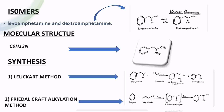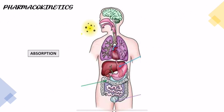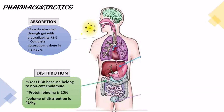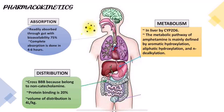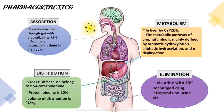Moving towards the pharmacokinetics of Amphetamine: Absorption — Amphetamine is well absorbed in the gut. Distribution — Amphetamine is distributed into body tissues, especially in the brain and CSF. Metabolism — metabolized in the liver by CYP2D6. Elimination — Amphetamine is eliminated via the urine.